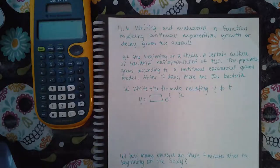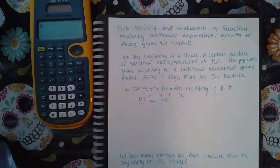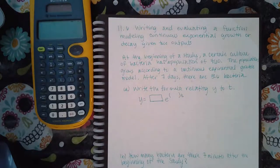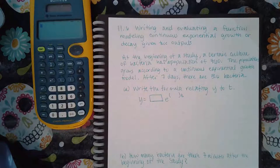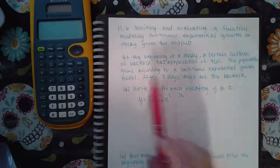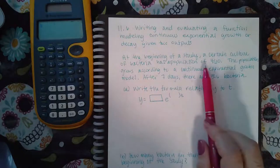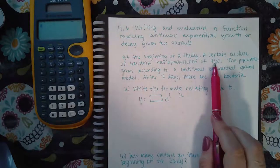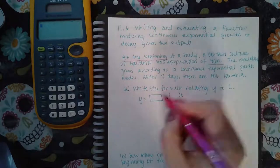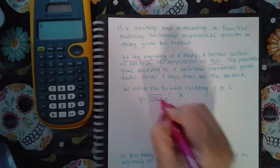Here it says writing and evaluating a function modeling continuous exponential growth or decay given two outputs. At the beginning of a study, a certain culture of bacteria had a population of 640. So because this was at the beginning, it had 640, I know that that's the initial amount.